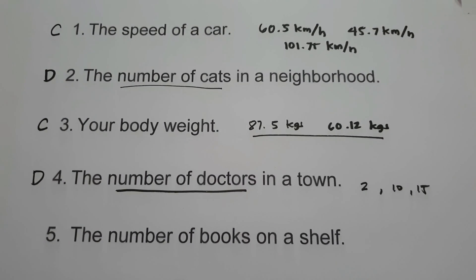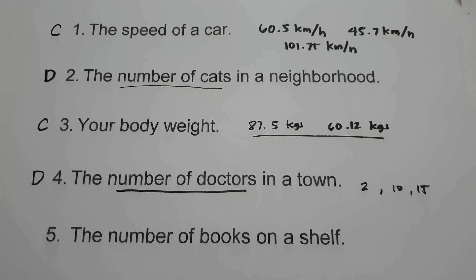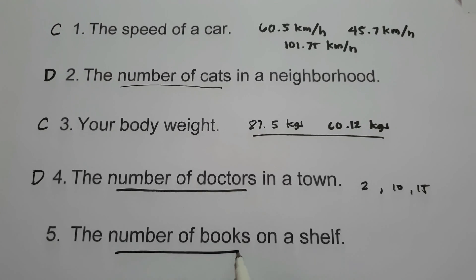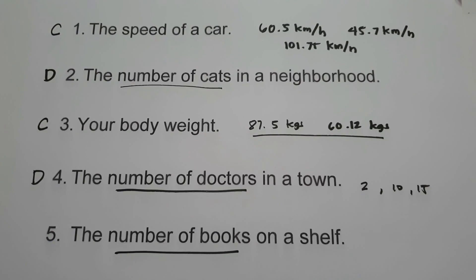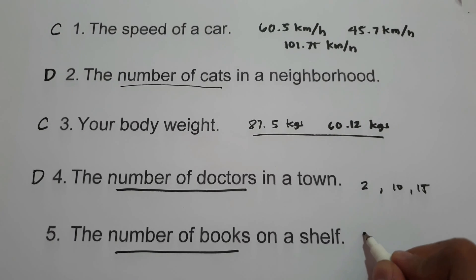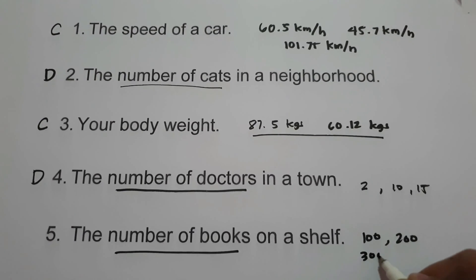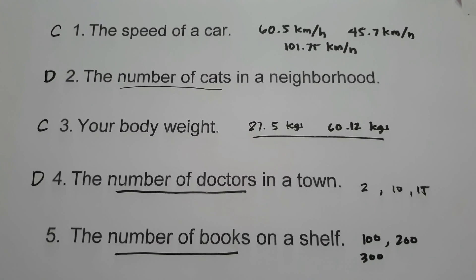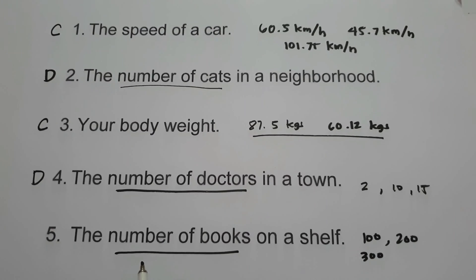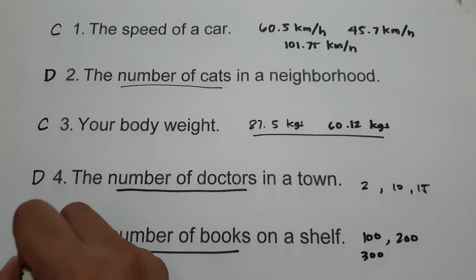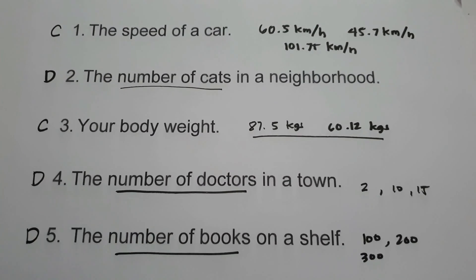What about number 5, the number of books on a shelf? How many books do we have on a shelf — 100, 200, or 300? So this one is an example of discrete random variable.